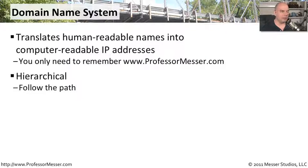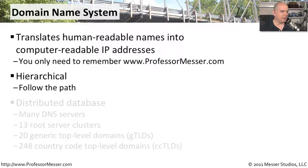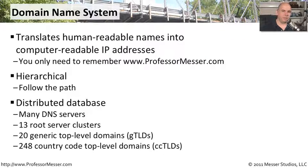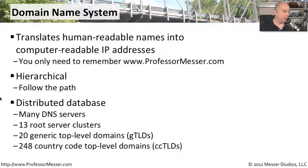DNS is something we call hierarchical, which means there are a series of servers set up from a top layer, a second layer, a third layer, and so on. DNS is also something called a distributed database. There's no single DNS server — there are thousands and thousands of DNS servers out there on the internet. There are 13 at the highest level: the root servers of the internet, arranged in 13 clusters.